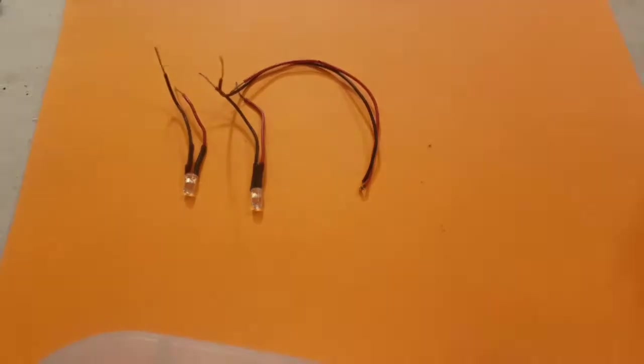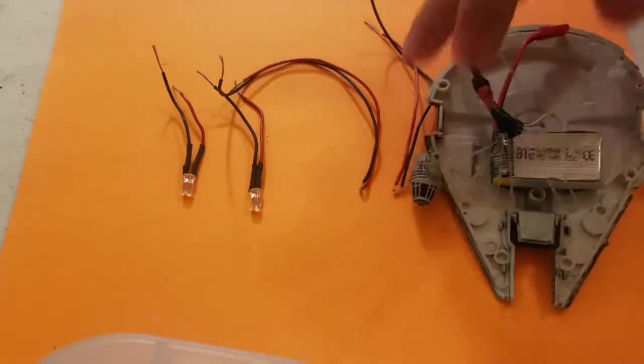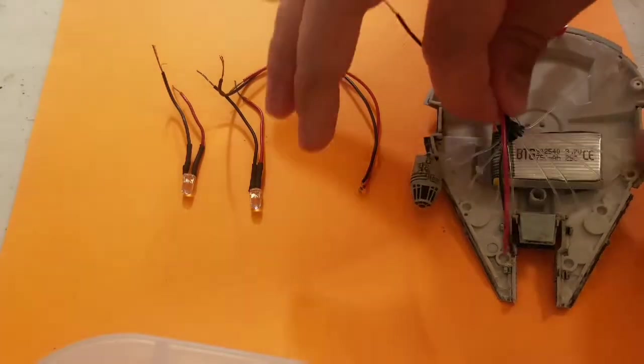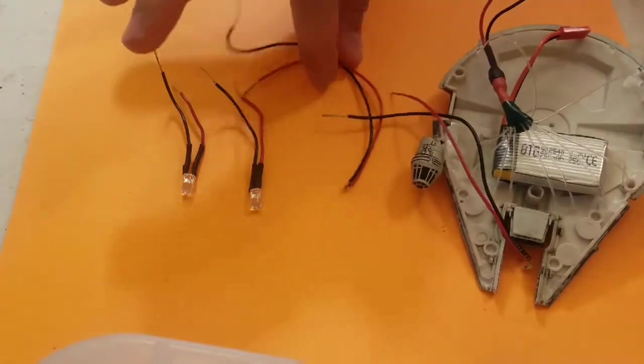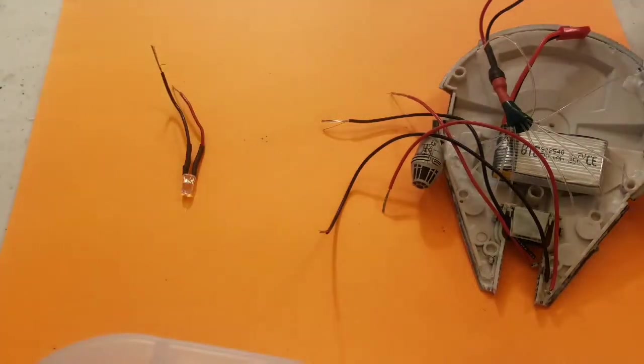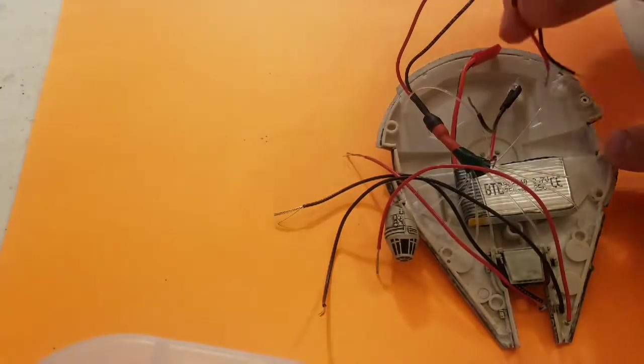Now we'll start installing all of the LEDs inside of the ship. We have the two blue LEDs for the engine, the two white LEDs for the headlights, and the YT1300 already has the fifth LED installed for the fiber optics. The two white ones will go up front and then the two blue ones will go in the back to provide light for the engines.